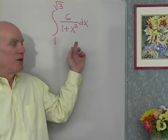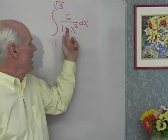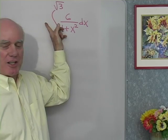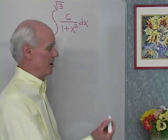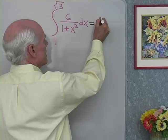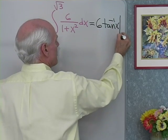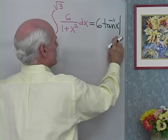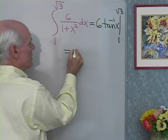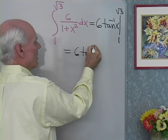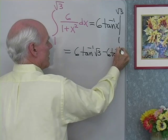Let's try another one: the definite integral from 1 to square root 3 of 6 over 1 plus x squared dx. The constant 6 can move outside the integral, leaving 1 over 1 plus x squared dx, which uses the inverse tangent formula. This gives 6 times inverse tangent of x evaluated from 1 to square root 3, equaling 6 inverse tangent of square root 3 minus 6 inverse tangent of 1.